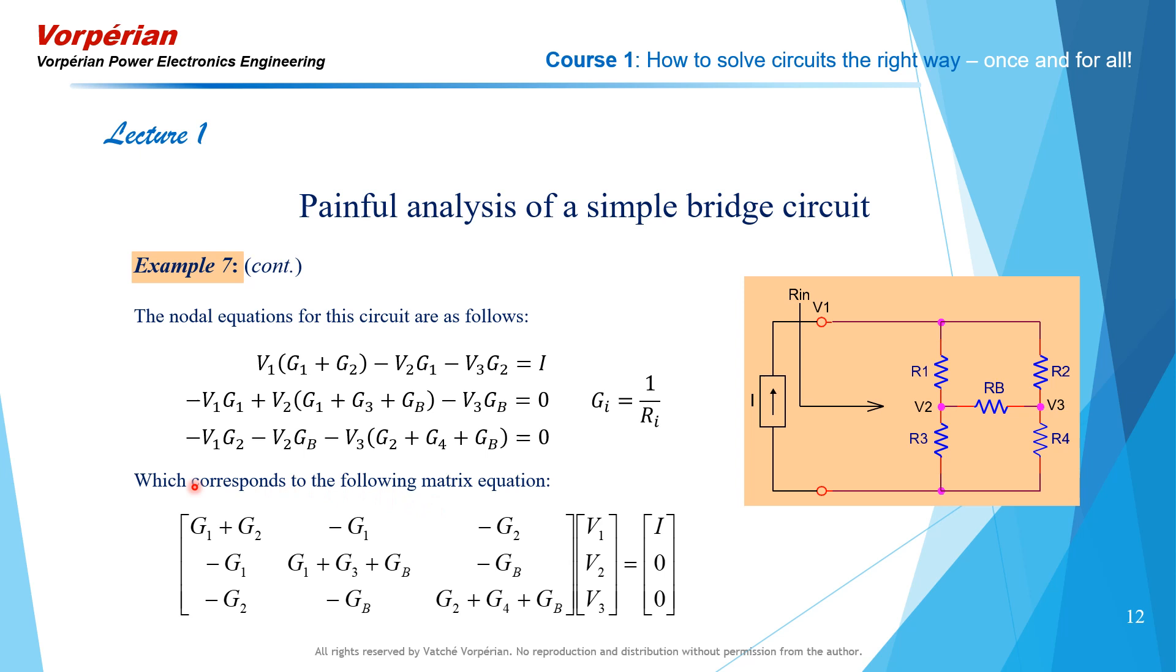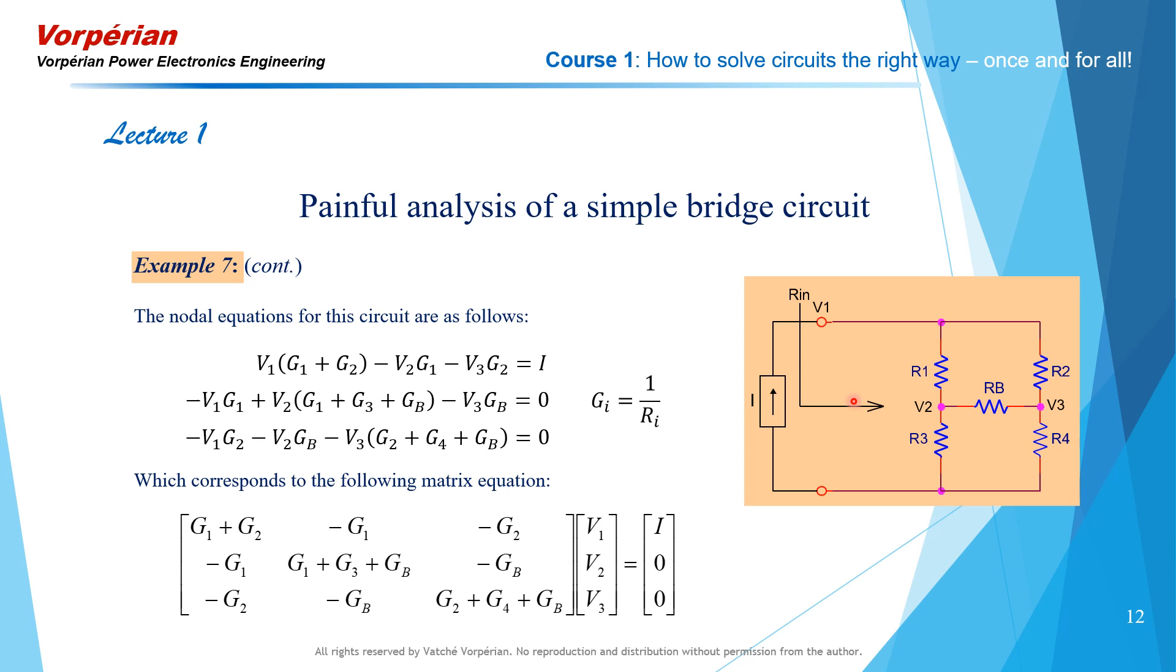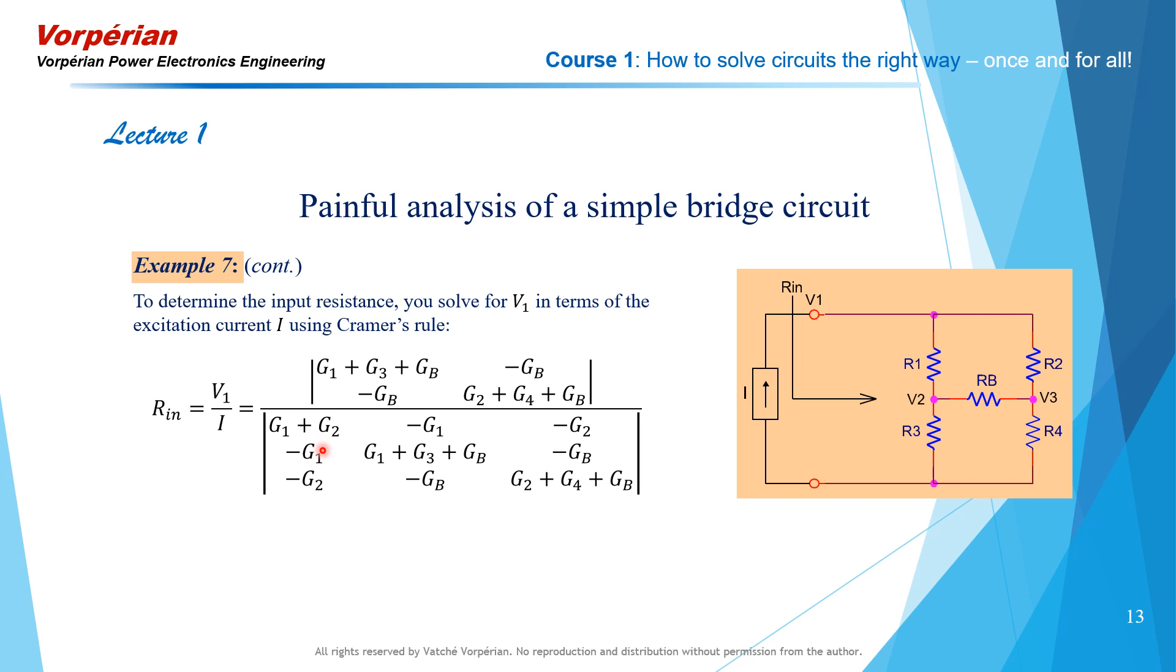Now that we have this matrix equation, how do we solve for it? We apply Cramer's rule so that we can determine the ratio of V1 to I, which is the input resistance of this circuit. When we apply Cramer's rule, we obtain the following result for the input resistance, and it turns out to be ratio of two determinants. Clearly, if you're expecting to obtain a meaningful answer for Rn, expanding these two determinants is not going to result in such a meaningful expression. It's going to be an awful lot of work expanding these two determinants, and at the very end, you're going to get one big meaningless answer.